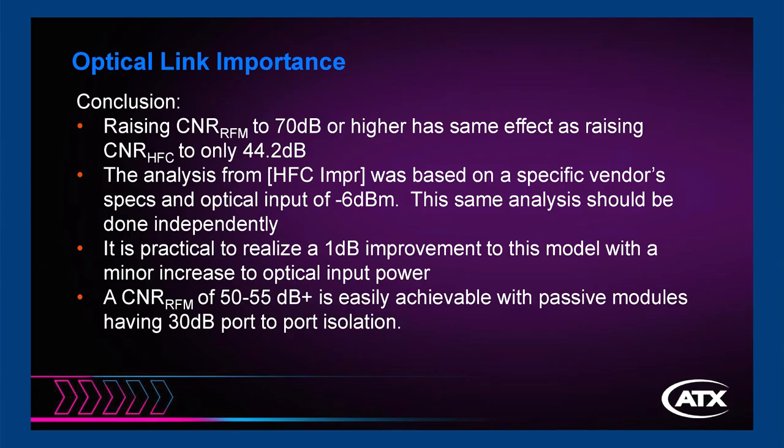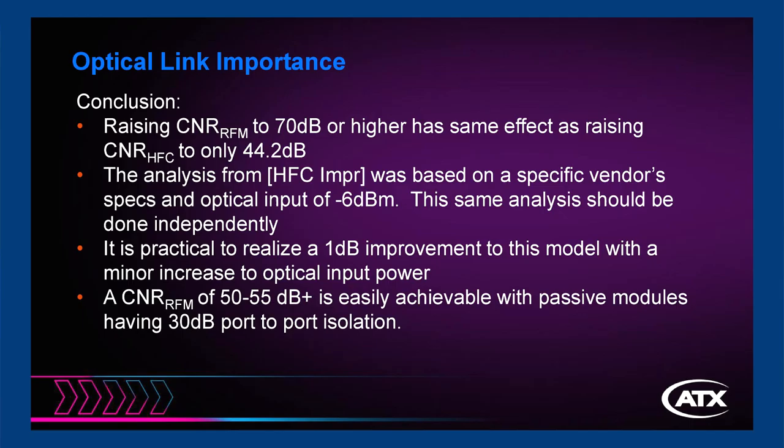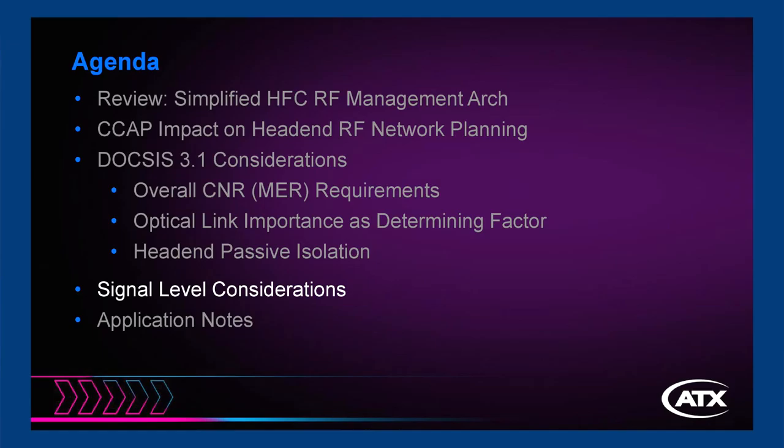To conclude on the optical link: that analysis is based on the Cisco link spec using minus 6 dBm. You can run the same calculation with any other vendor and it will produce similar results — Telesta recently released a white paper with a similar calculation using their own optics. A 1 to 2 dB improvement in the HFC link and getting to 50 to 55 dB of CNR in head-end RF management is easily achievable with passive modules and some padding and cable loss.